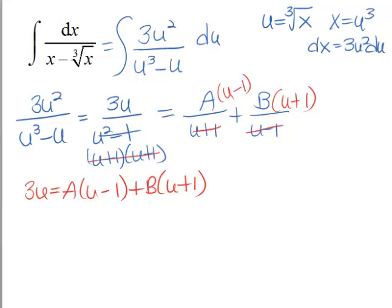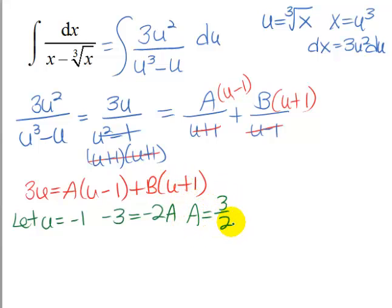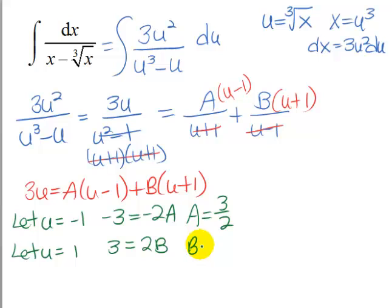So we're going to use the convenient u method here. We're going to let u equal negative 1. That would make us negative 3 equal negative 2A, and this one would zero out. So A equals 3 halves. Then we'll conveniently let u equal 1 so that we can zero out the A. And that would leave us 3 equal 2B. So it looks like B is also 3 halves.